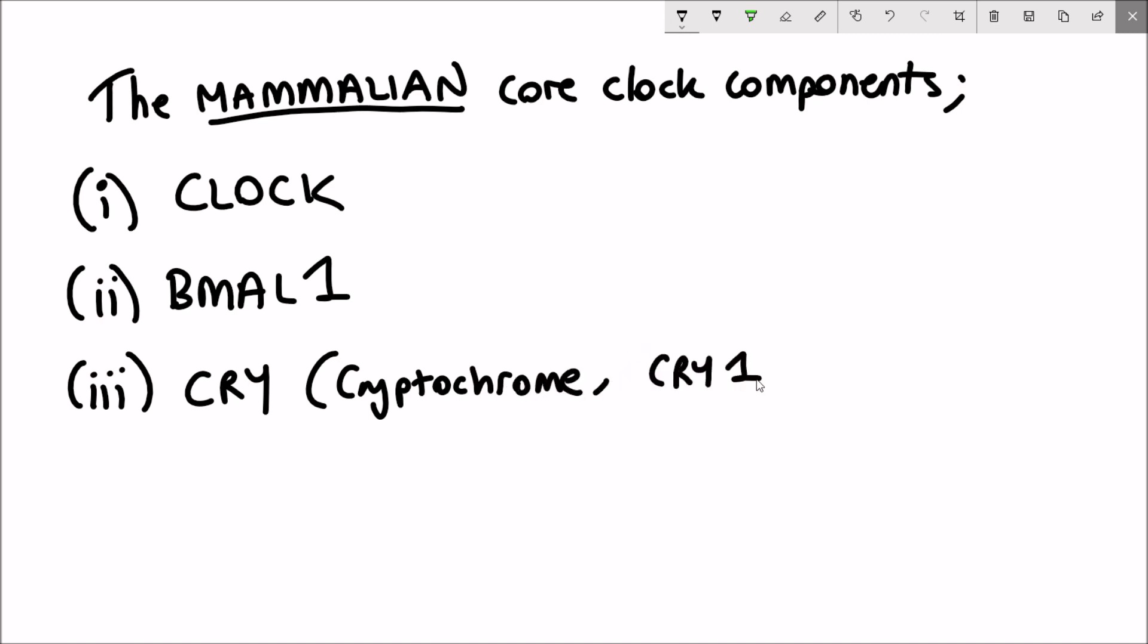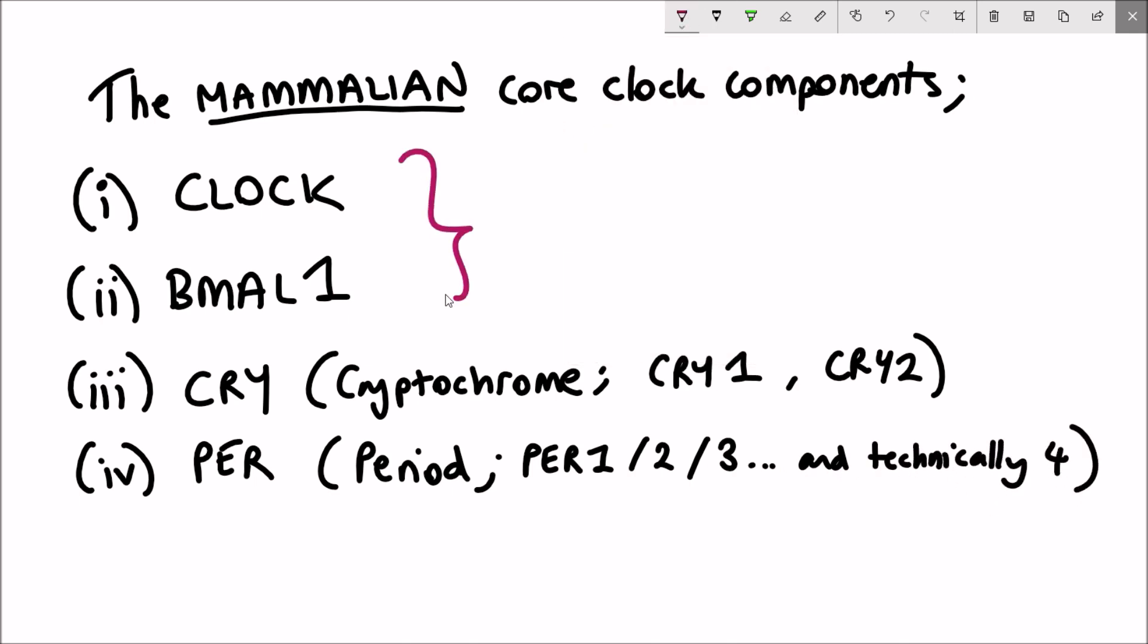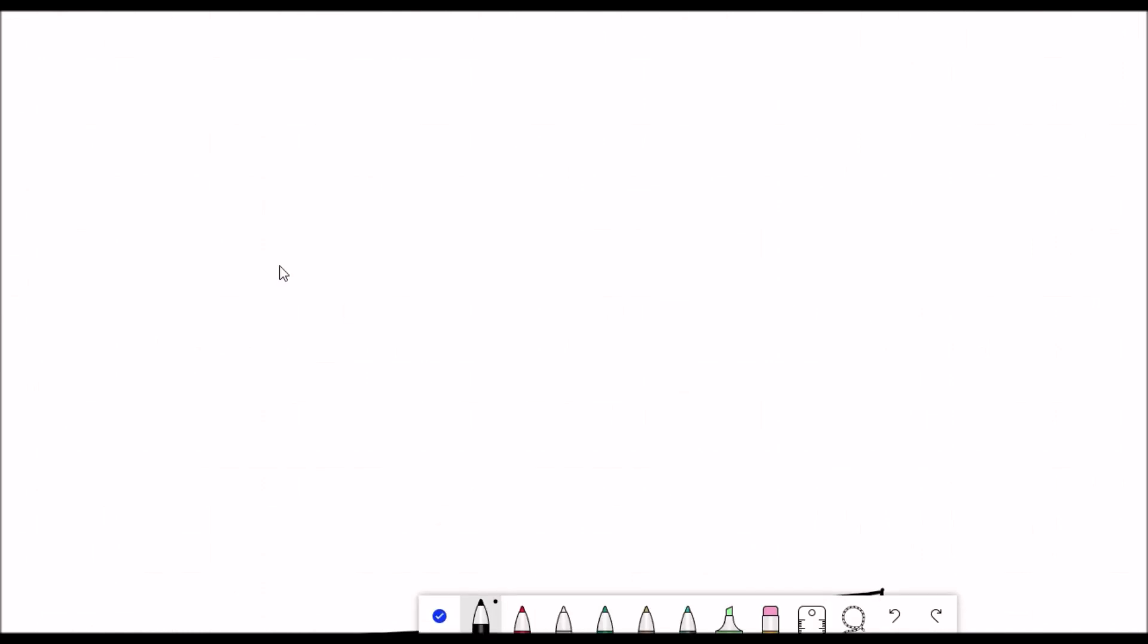And these are clock, BMAL1, cryptochrome, and period. These are factors that couple together. So clock and BMAL1 bind together, and period and cryptochrome bind together. In reality, it is a lot more complicated than this, but for understanding this paper, that's all you need to know for now.